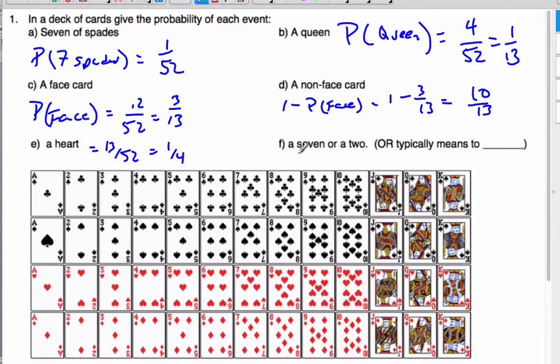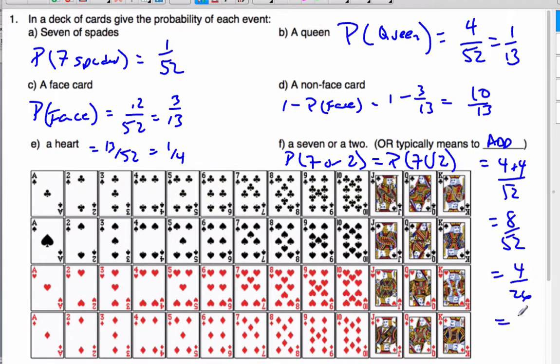And then, a probability of a 7 or a 2. Now, or, another way I could write it is a probability of a 7 or a 2. And this typically means to add. So, here's a 7, I got 4 possibilities for a 7, and I have 4 possibilities for a 2. So I'm going to add the 4 plus 4, all out of 52. So, it's equal to 8 out of 52, which is 4 out of 26, which is 2 out of 13, which is the 2 cards out of the 13.